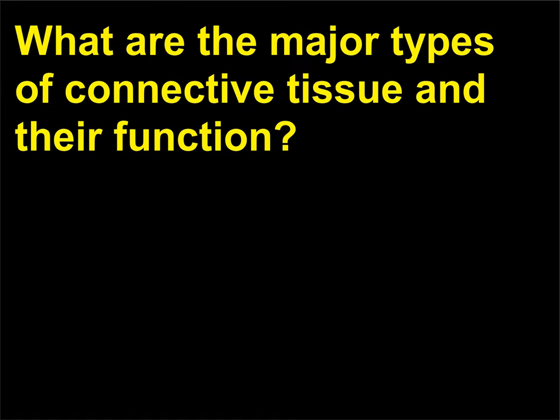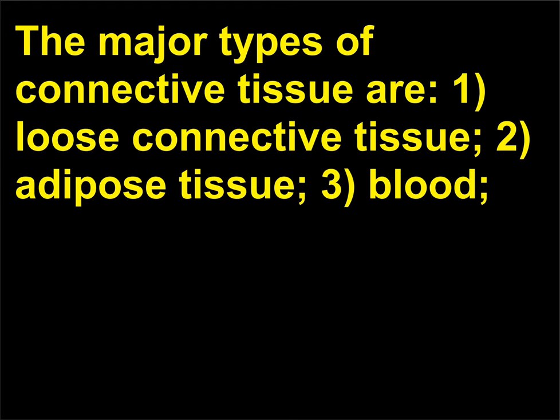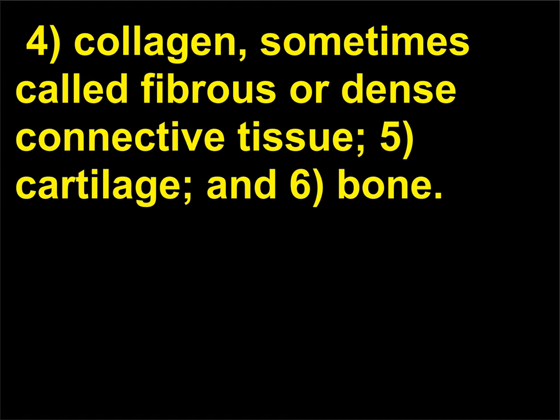What are the major types of connective tissue and their function? The major types of connective tissue are: 1. Loose connective tissue, 2. Adipose tissue, 3. Blood, 4. Collagen — sometimes called fibrous or dense connective tissue, 5. Cartilage, and 6. Bone.